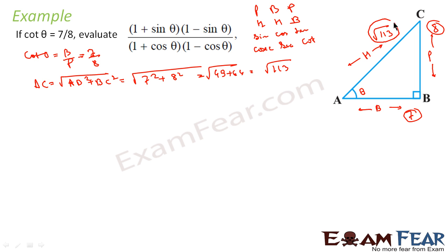Now we have to evaluate (1 - sin θ)(1 + sin θ) by (1 + cos θ)(1 - cos θ). Sin θ is P by H, which is 8 by root 113. Cos θ is B by H, which is 7 by root 113.